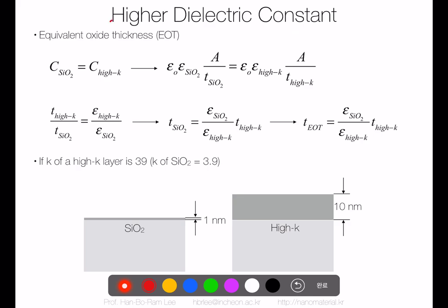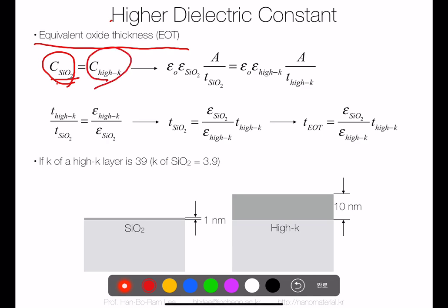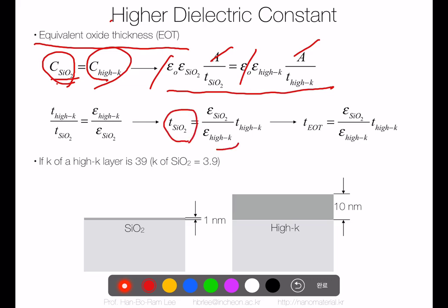If silicon oxide capacitance C_SiO2 equals the capacitance of the high-k material, we can set this equation. Removing common terms, the thickness ratio of high-k material to silicon oxide equals the k-value ratio. The silicon oxide equivalent thickness defined this way is called the EOT — equivalent oxide thickness.